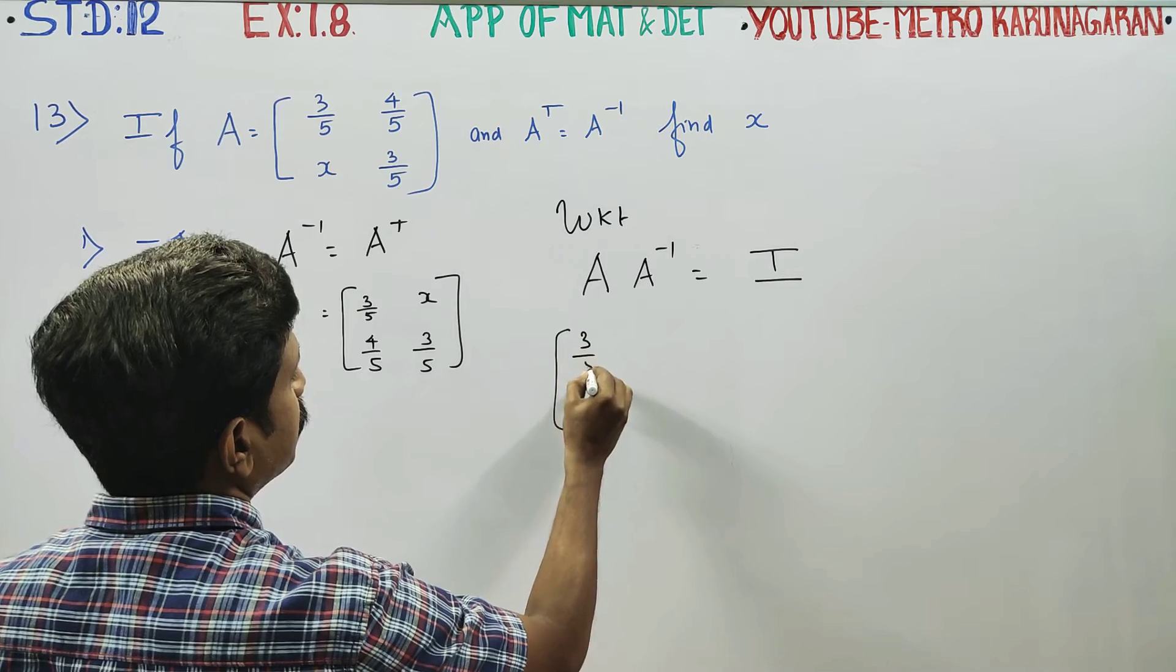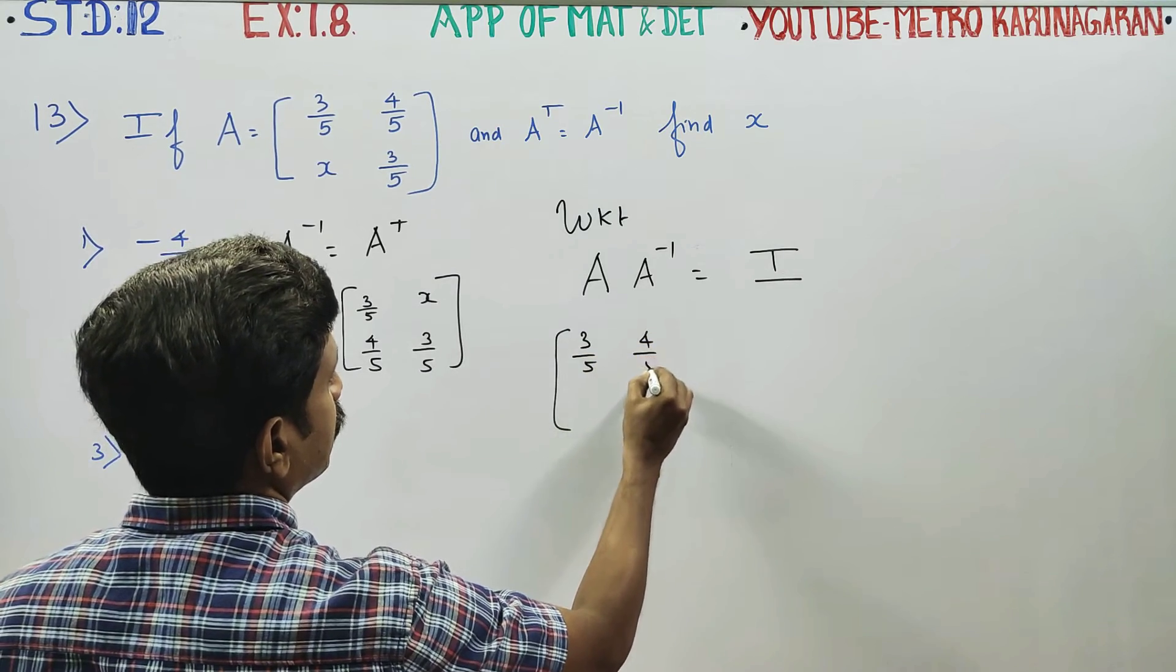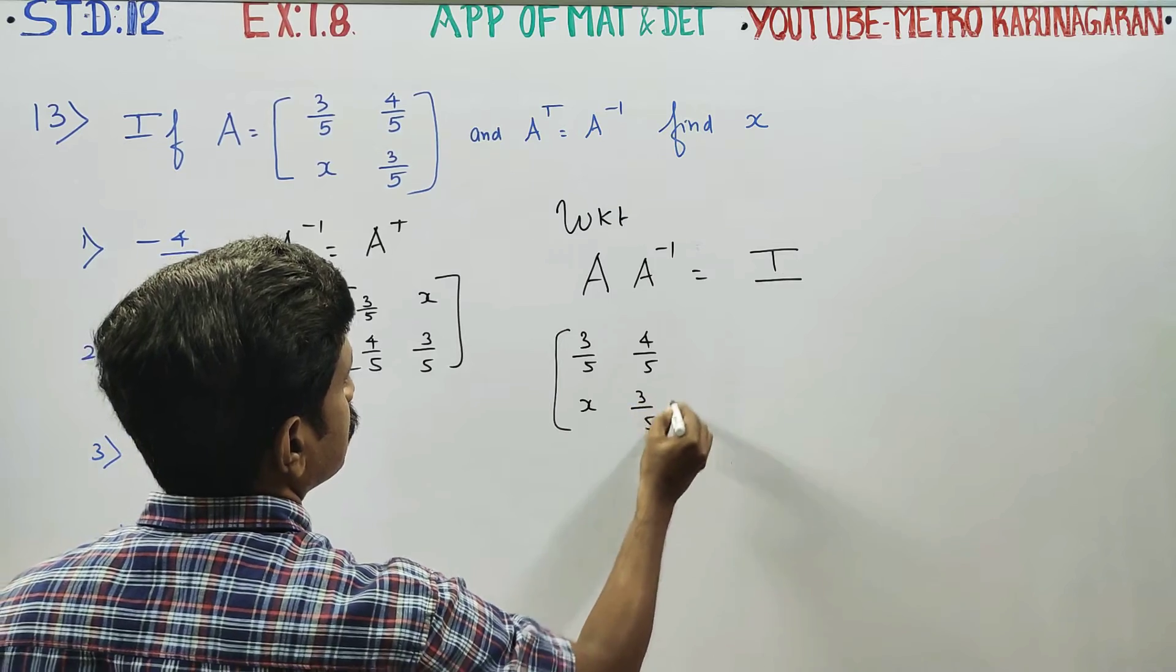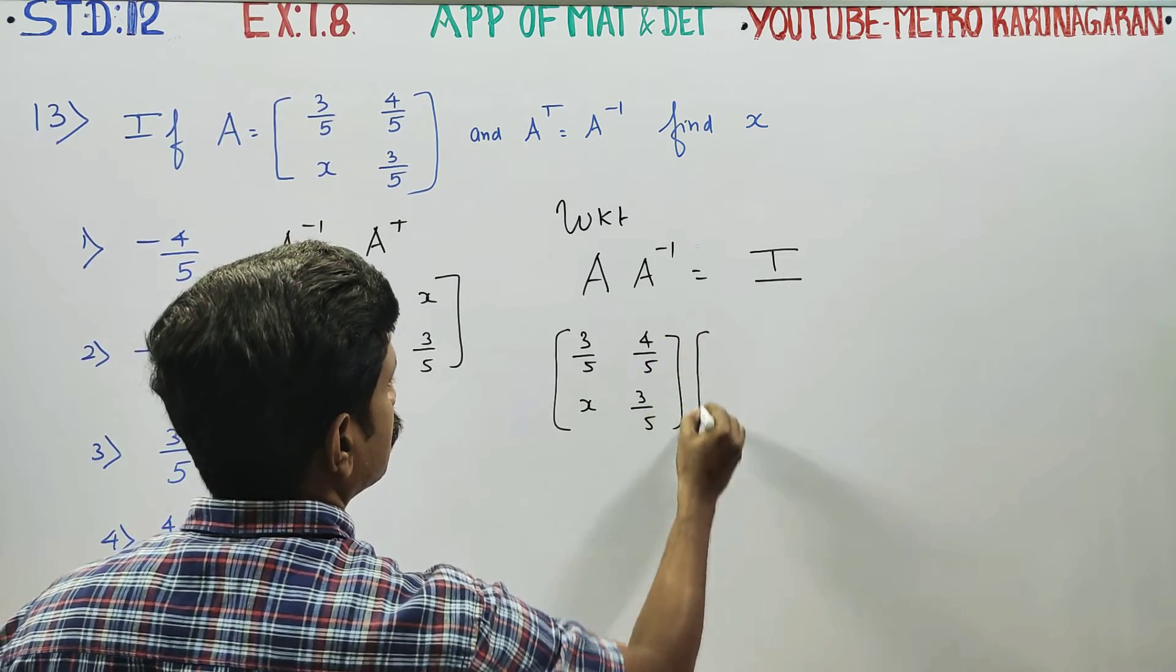3 by 5, 4 by 5, X, 3 by 5, right? Into A inverse.